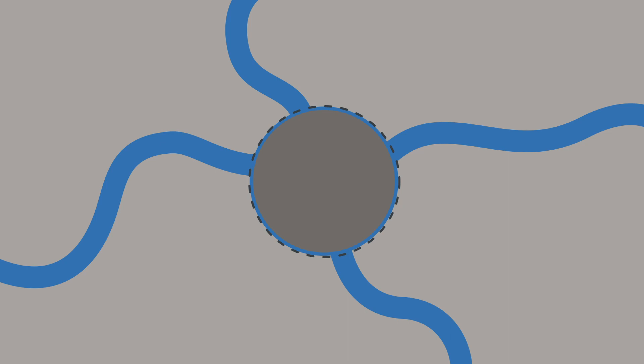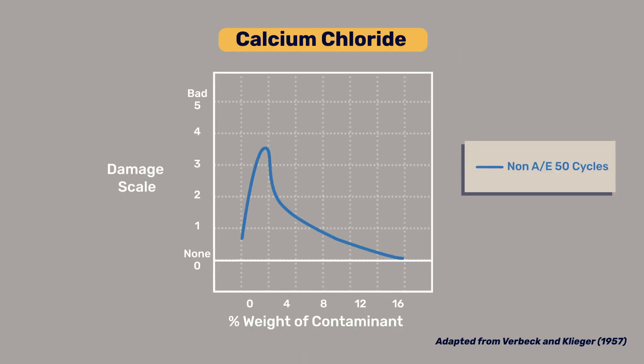Interestingly, air entrainment also reduces the damage in salt scaling. Going back to our previous cases, the extent of damage for the same number of cycles, 50, is substantially reduced when air entrainment is added when preparing concrete.